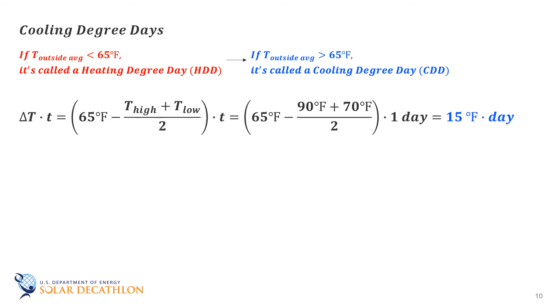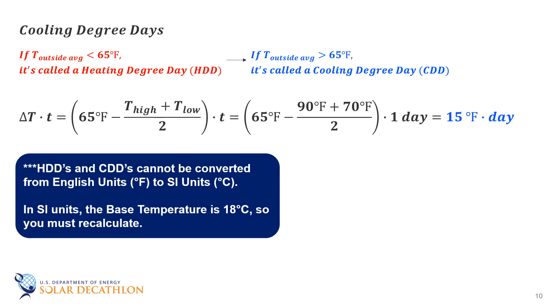A few other notes. You cannot do a unit translation with heating degree days from the English set of units to the SI units. You have to re-tabulate. Rather than use a base temperature of 65 degrees Fahrenheit, a base temperature of 18 degrees Celsius is used. These values are also widely available, including from the NREL Red Book. Other base temperatures are also used, such as 50 degrees Fahrenheit for growing degree days. This term is often used by farmers and gardeners.